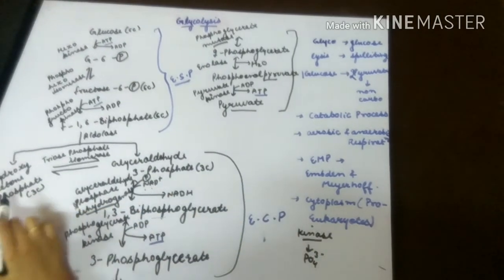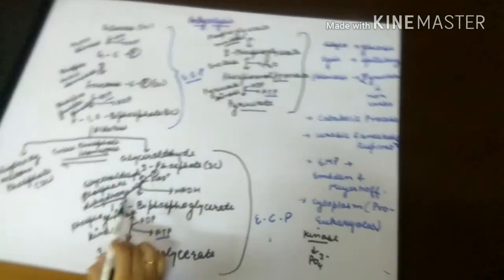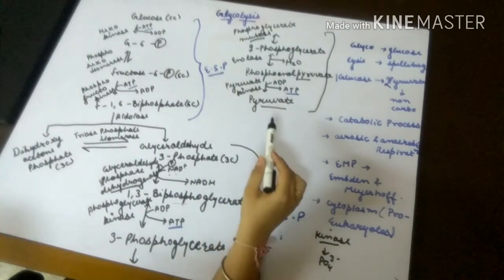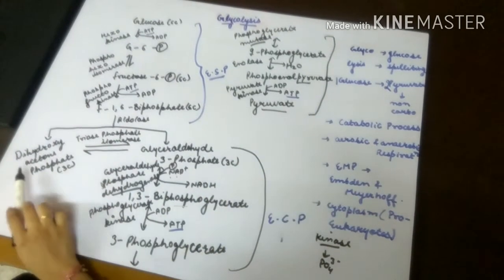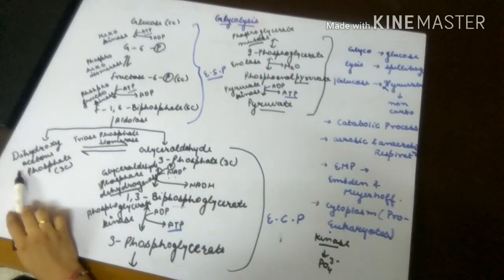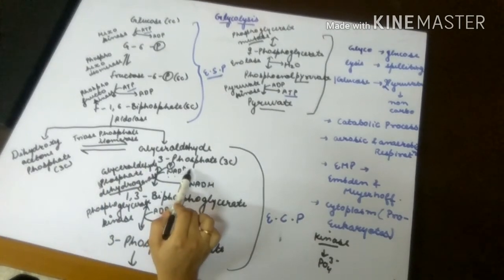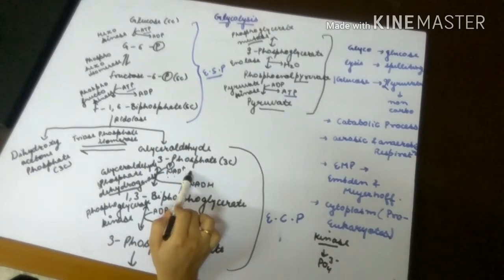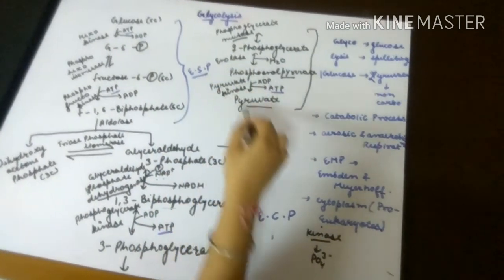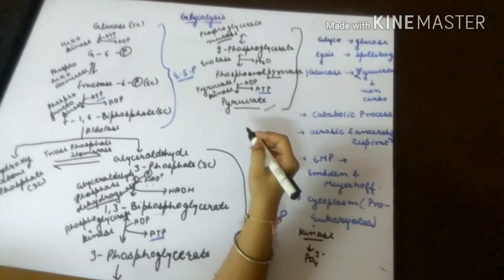Dihydroxyacetone phosphate is converted into glyceraldehyde-3-phosphate, which will again go through the same pathway and be converted into pyruvate. By this, two pyruvate molecules are formed.